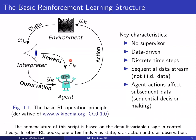Throughout this course we use control-theory-based nomenclature: the action is u, the state is x, and the observation or measurement is y. In other RL books you may find observation as o, action as a, and state as s. Since this lecture has a control theory background, we stick to the control theory nomenclature.